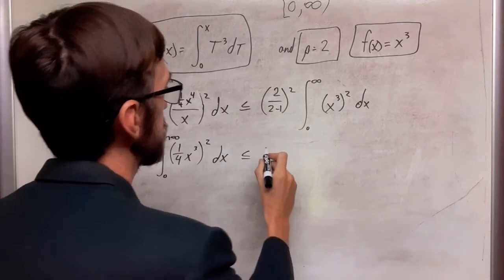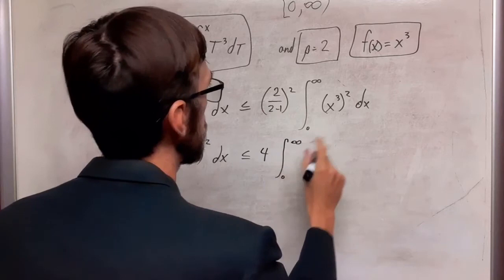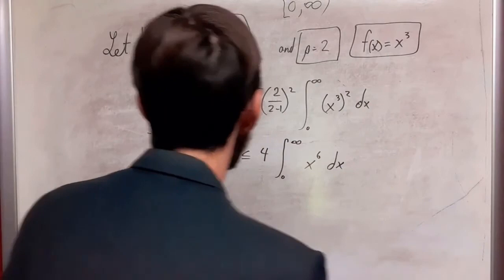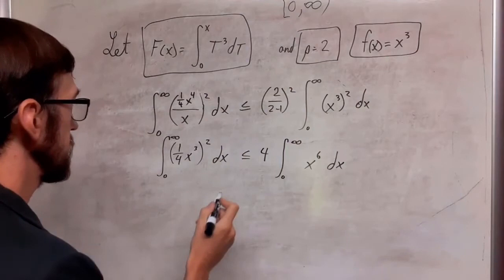And then we can move this coefficient through the integrand and take it outside here. This is going to go to 4 and this is going to go to x to the 6th. So just remember when these exponents are separated by a parenthesis they multiply together.